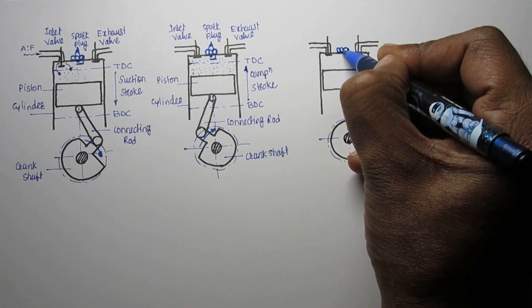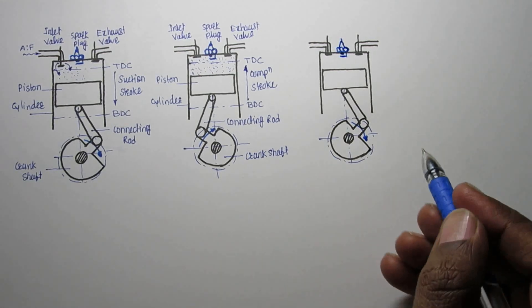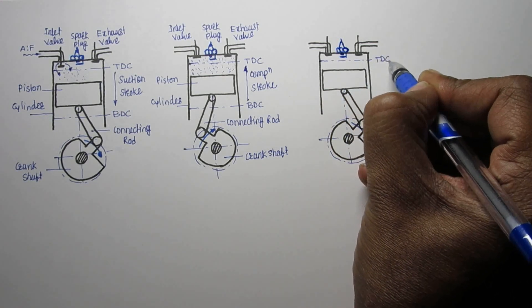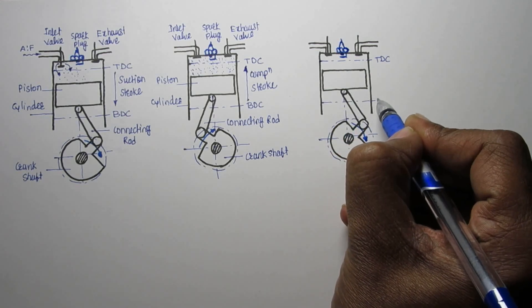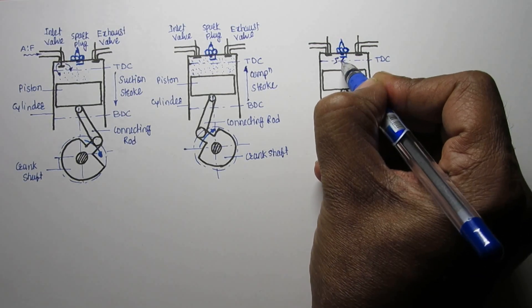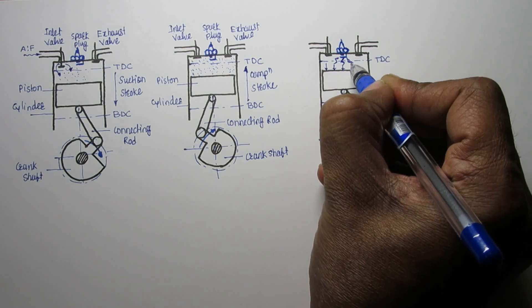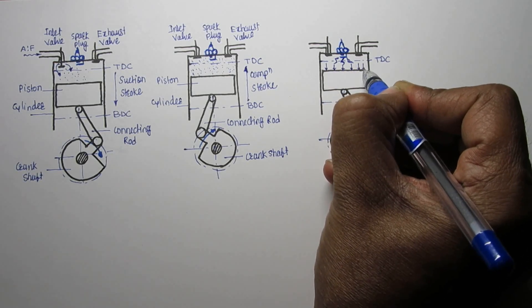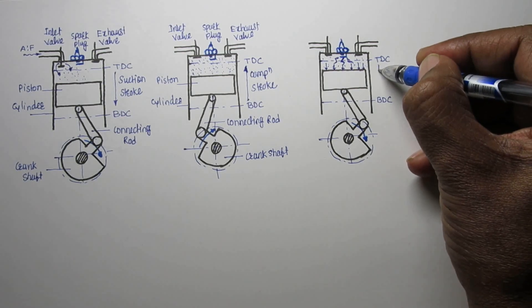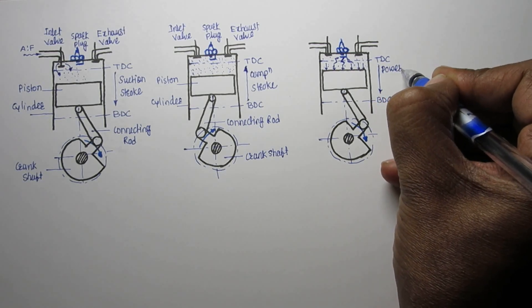In the power stroke, the spark plug is active. Show some spark and when the charge burns, during its expansion it exerts pressure on the piston — also show arrows indicating the piston is moving downward. The stroke is from TDC to BDC. Here we get power, so it is called the power stroke; sometimes it is also called the expansion stroke.